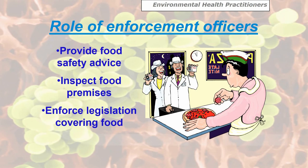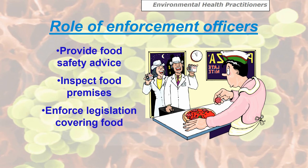The food police are what are called Environmental Health Practitioners — they're the enforcement officers employed by the local council. If you've got a problem with food poisoning and you're yourself a victim, contact your local council and ask to be put through to Environmental Health. By law they can give food safety advice, inspect food premises, and enforce legislation covering food. You can see on the identity cards they've got EHO — that's Environmental Health Officer — but these days they tend to be called Environmental Health Practitioners.